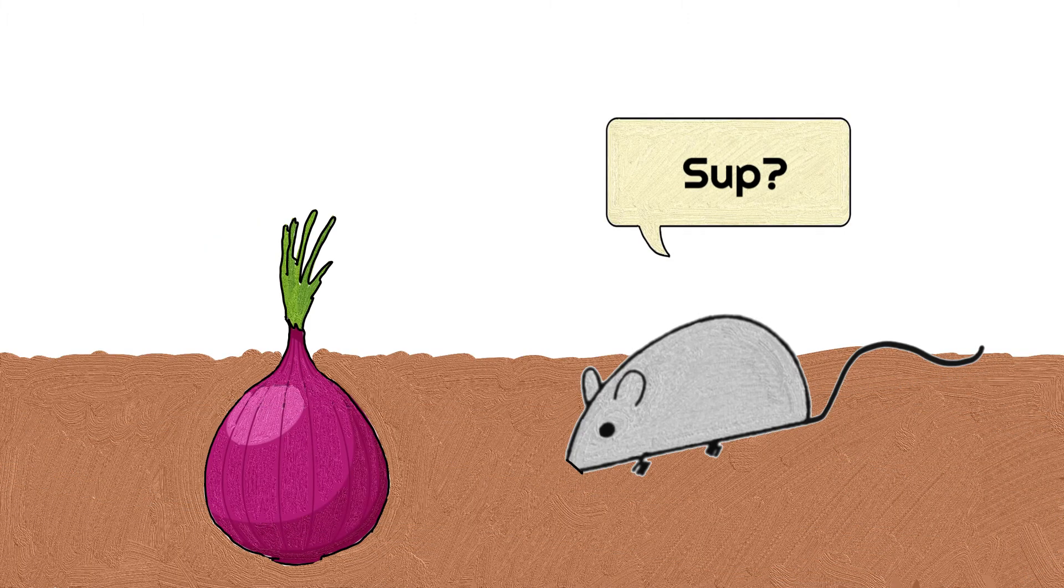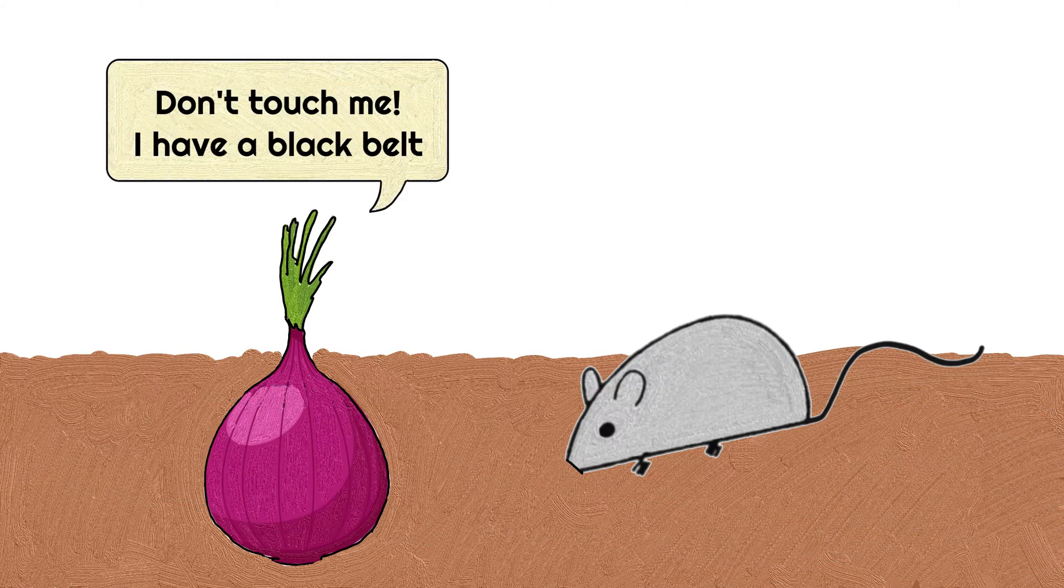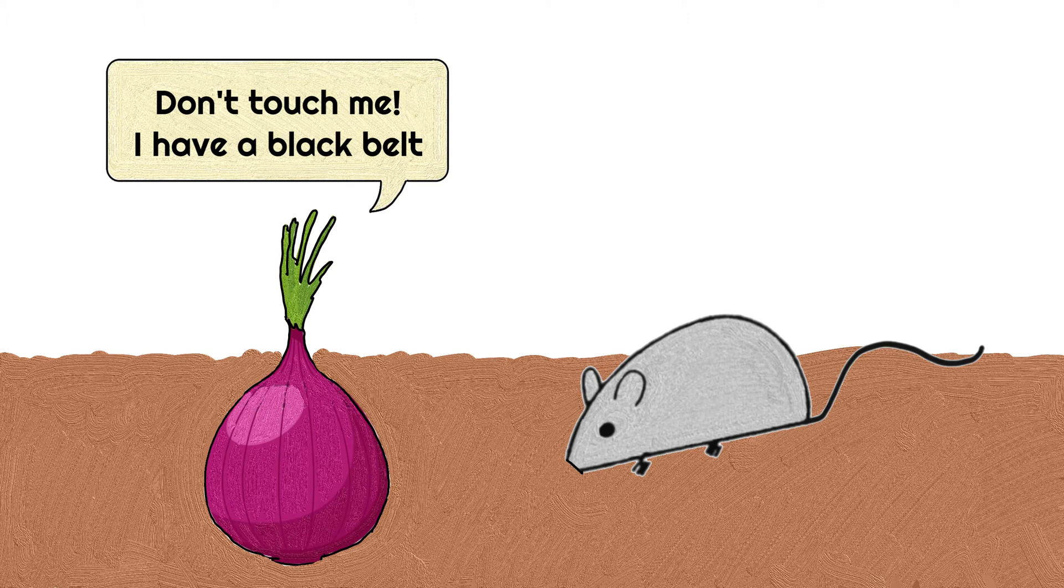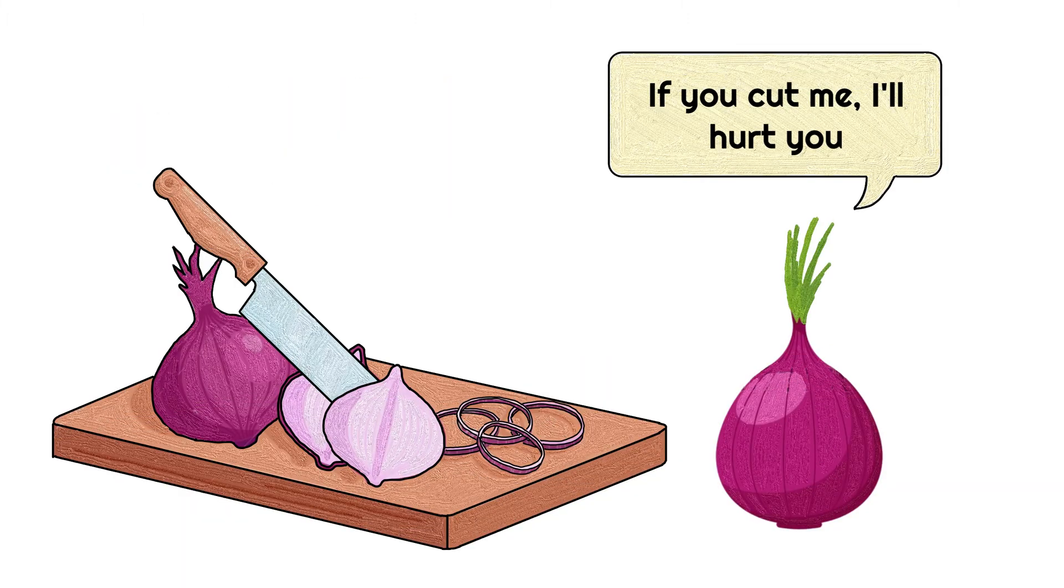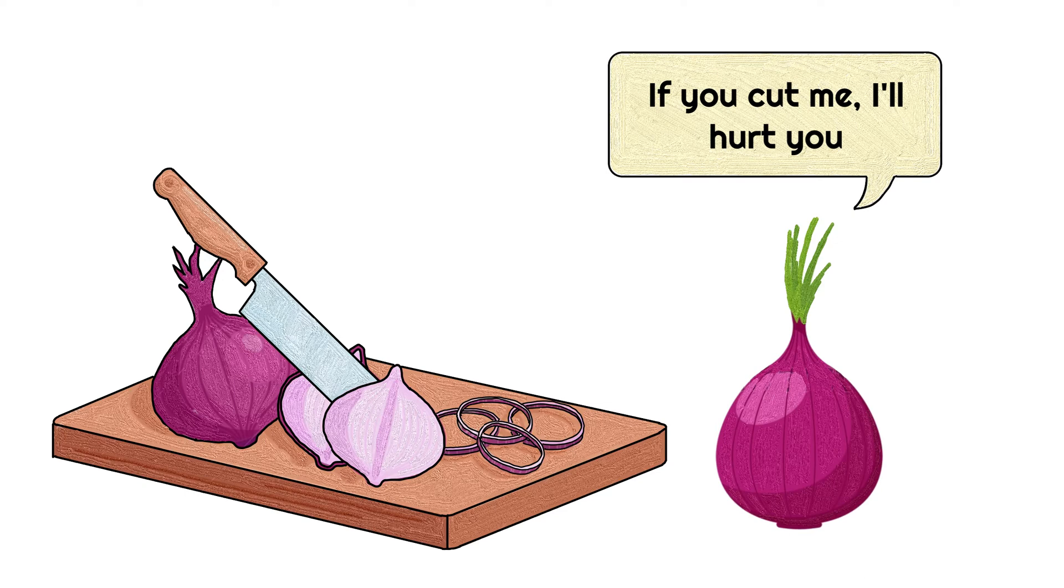Onions grow underground and that means they'll be a target for many animals to eat. To prevent animals from eating them, onions have a defense mechanism that protects them from hungry animals. Onions produce a chemical that repels creatures who might eat them, and that's one of the ways that plants defend themselves.